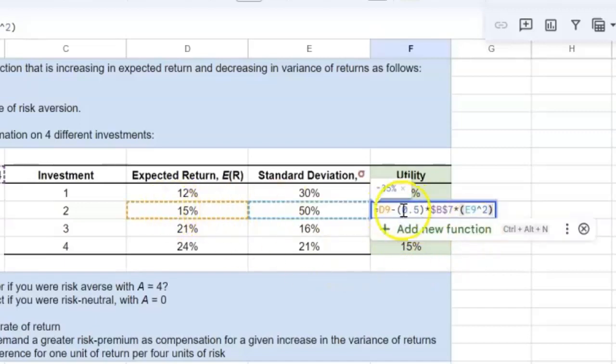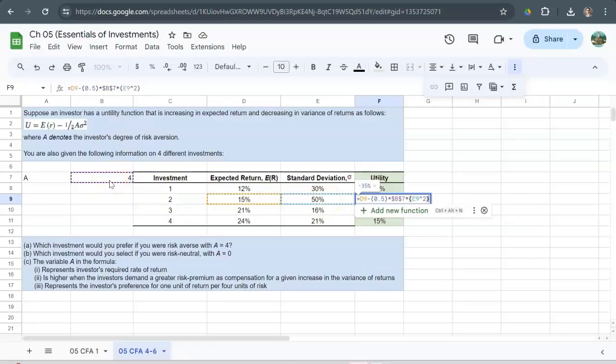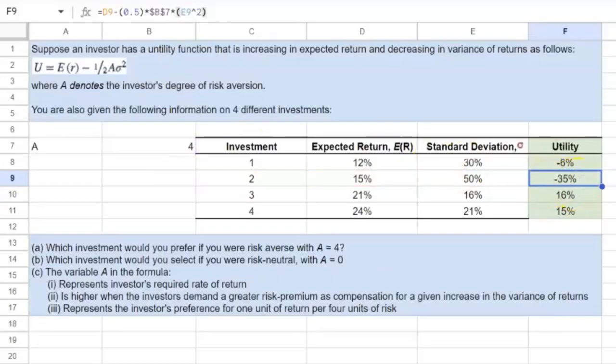So for example, over here, I'm basically using expected return for investment two, the standard deviation of investment two, but the same coefficient or the same degree of risk aversion, which is four.